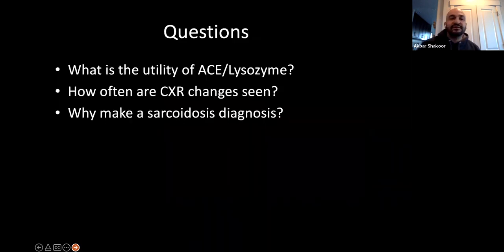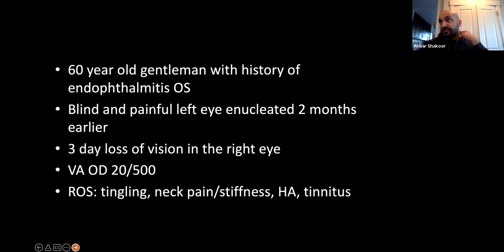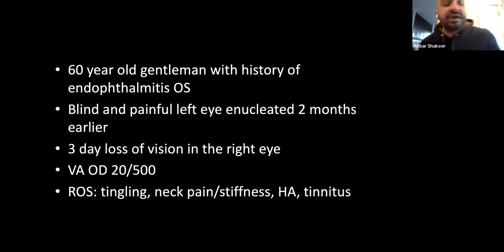The utility of ACE and lysozyme is not very good. Chest x-ray changes are seen in about 70%, but remember those changes are often temporally discrete from ocular findings. Patients with pulmonary sarcoidosis may not have ocular sarcoidosis yet, and patients with ocular sarcoidosis may have had previous chest x-ray changes that have since resolved. Why make a diagnosis? It's useful for prognostication — patients with sarcoid uveitis or optic neuropathy are at very high risk for neurosarcoidosis, which can have devastating consequences.